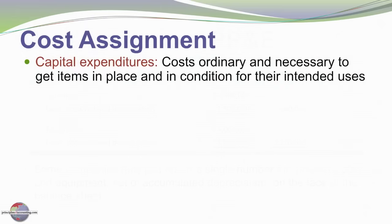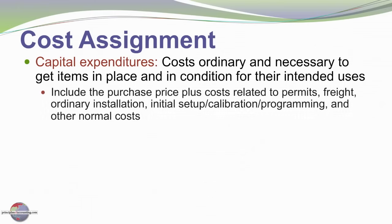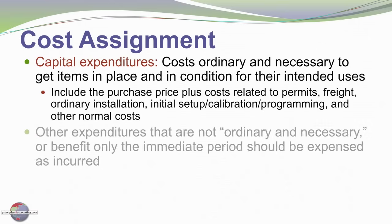Moving on to consideration of cost assignment, there's a term you should be aware of: capital expenditures. Those are the costs that are ordinary and necessary to get the items in place and in condition for their intended use. It would include the purchase price for the asset, plus costs related to permits, freight, ordinary installation, initial setup, calibration, programming, and other such normal costs.